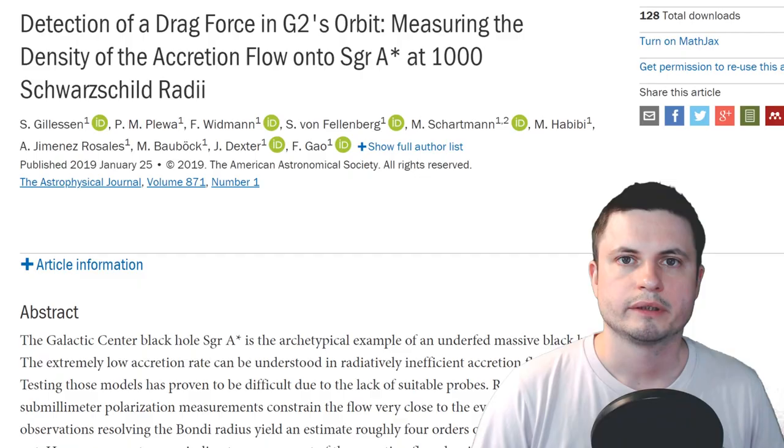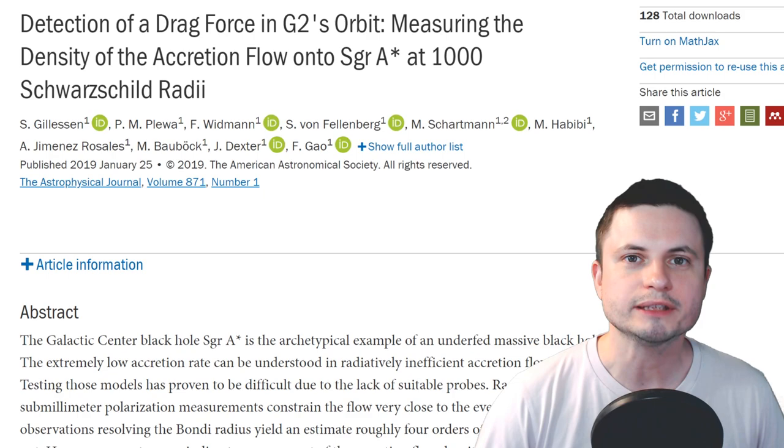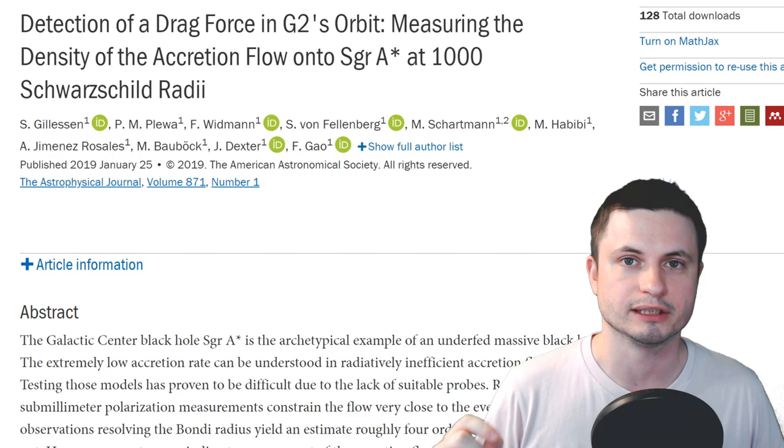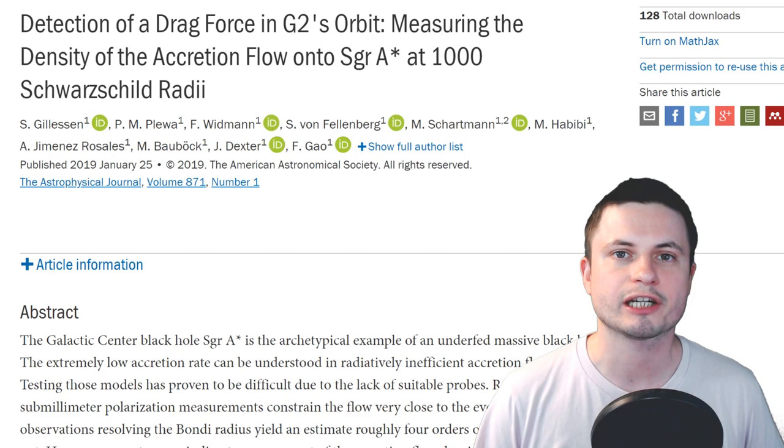The scientists studying this region, specifically the G2 cloud, started to realize something. As they were observing the stars orbiting and the dust cloud leaving the system, something was actually stopping the dust cloud from leaving at the initial speed. In other words, something was pulling on it, dragging it. There was something causing it to slow down. The scientists realized that it's very likely there's essentially atmosphere-like conditions around the black hole, and they refer to this as accretion flow density.